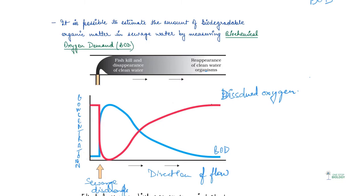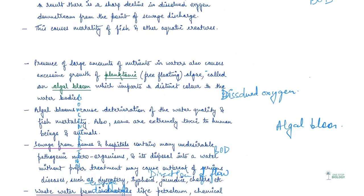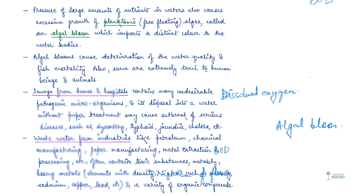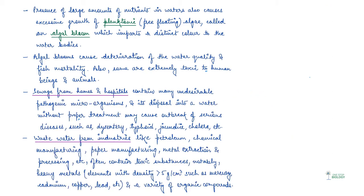Now, this causes mortality of fish and other aquatic creatures. Presence of large amount of nutrients in water also causes excessive growth of planktonic like free-floating algae and this is known as algal bloom. This imparts a distinct color to the water body and this algal bloom causes deterioration of water quality and then fish mortality. So presence of large amount of nutrients also causes problems.